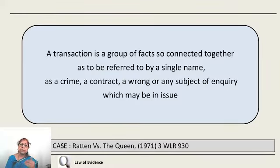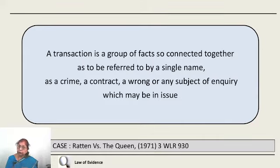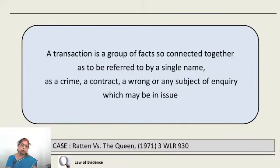What is a transaction? A transaction is a group of facts so connected together that they can be referred to by a single name. When we say a crime is committed, that crime is a transaction. When a contract has been entered into, the contract is a transaction. When a wrong or tort has been committed, that wrong is a transaction. Whatever group of facts are connected in that transaction, they have to be proved to establish that particular issue before the court.